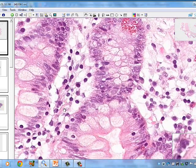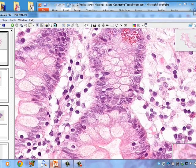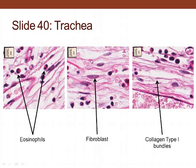The next slide is of the trachea. We can see eosinophils, fibroblasts with a small amount of cytoplasm on either side of the nucleus, a nucleolus, and collagen bundles in the extracellular matrix — produced by these fibroblasts.